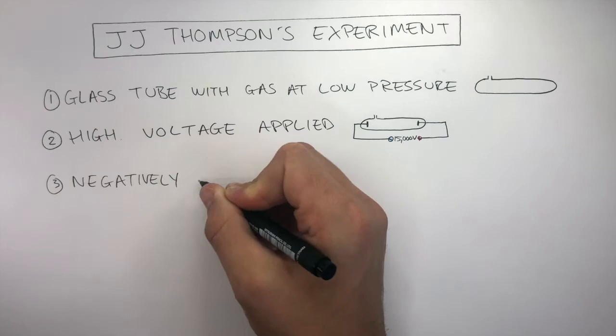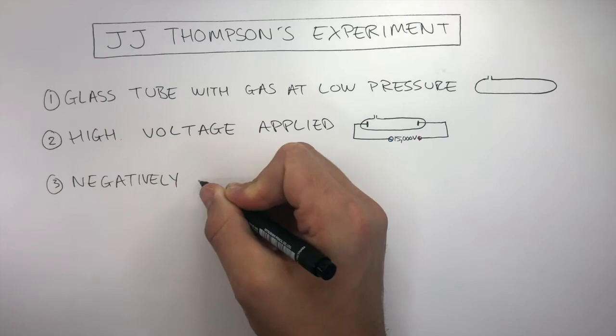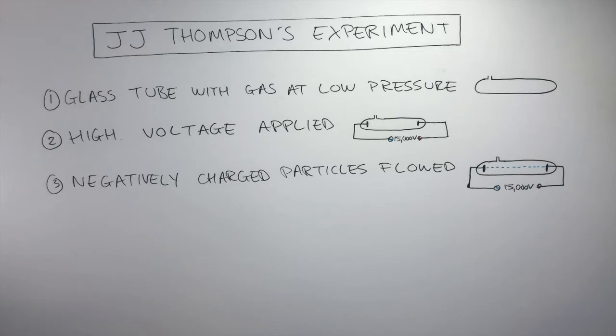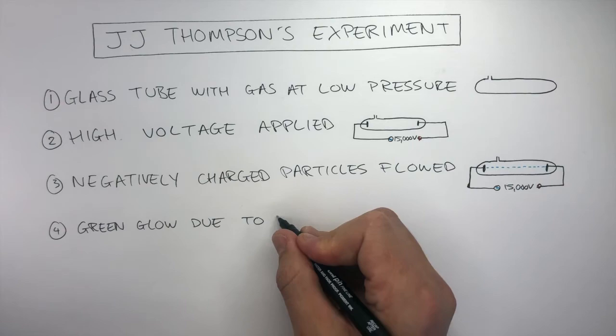Third, negatively charged particles flowed from the cathode to the anode. Fourth, there was a green glow due to the excited electrons of the atoms of the gases. The special name of the flow of these electrons is known as a cathode ray.